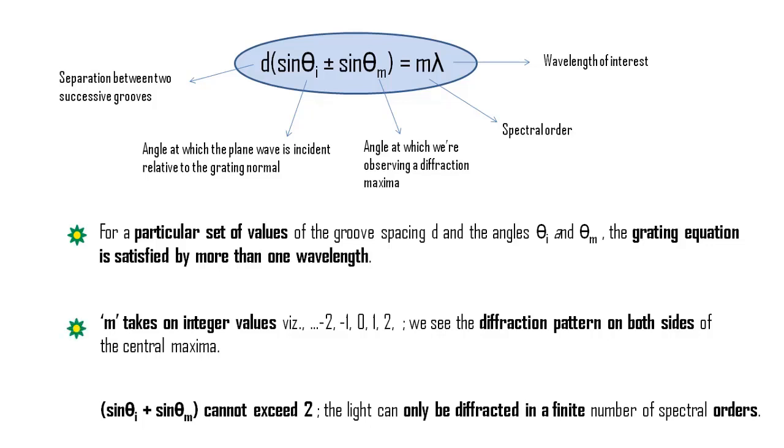The spectral order m can take on integer values, which tells us why we can see the diffraction pattern on both sides of the central bright. Lastly, only those spectral orders for which the absolute value of m lambda by d is less than 2 can exist. If this is not the case, sin of theta i plus sin of theta m would exceed 2, which is physically meaningless. This restriction prevents light of wavelength lambda from being diffracted in more than a finite number of orders.